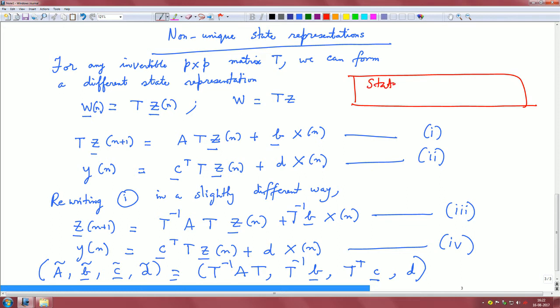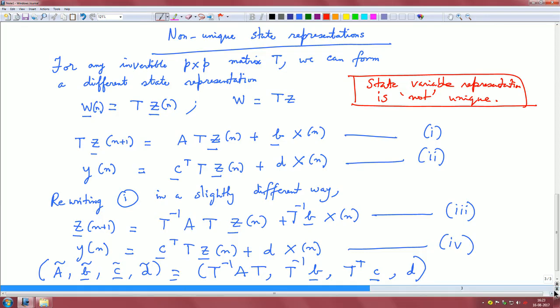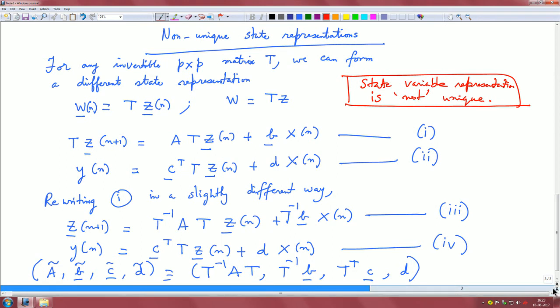That is the take home message: state variable representation is not unique. And a trivial invertible matrix is the permutation matrix. If you just think about a permutation matrix, it is an invertible matrix. A good example is suppose I have an object (a, b, c).